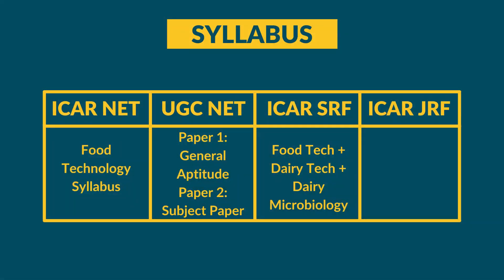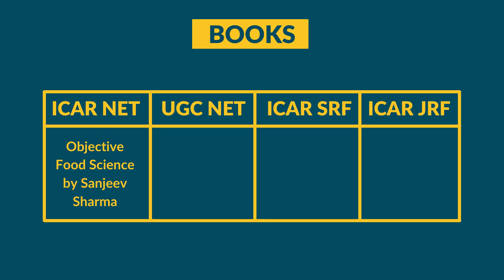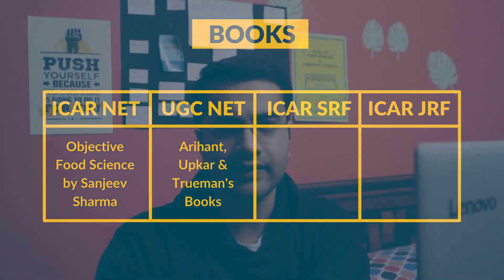For ICER-JRF, the syllabus is similar to ICER-NET, covering food technology. For recommended books: for ICER-NET, check out Food Science by Norman Potter, Food Facts and Principles by Shakuntala Manay, Dairy Technology by Sukumar De, and Objective Food Science by Sanjeev Kumar Sharma for MCQ practice. For UGC-NET, check Arihant's book, Oswal and Trueman's book on UGC-NET home science, and Pearson's book for General Aptitude.